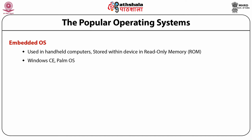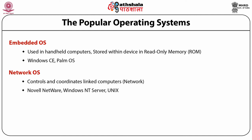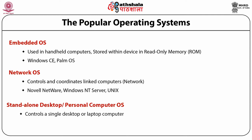Popular operating systems can be categorized into three types. Embedded operating systems are used in handheld computers, stored within the device in read-only memory — like Windows CE or Palm OS. Network operating systems control and coordinate linked computers in a network; Novell was the first, followed by Windows 2008 and Unix. Standalone desktop or personal computer operating systems control a single desktop or laptop and are client operating systems — starting with Microsoft DOS, then Windows, Mac OS, and Linux.